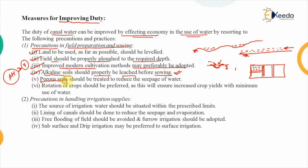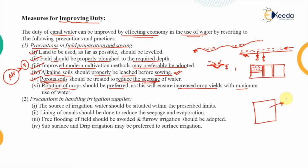The next precaution: if the soil is porous — meaning it has a high number of pores — it should be treated so that these pores are clogged, which reduces seepage of water through the ground. Next, rotation of crops should be preferred because it ensures increased crop yields with minimum use of water. For example, if land has nutrients like nitrogen, potassium, and phosphorus, growing a nitrogen-intensive crop will exhaust that nutrient.